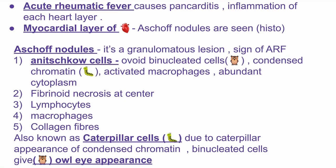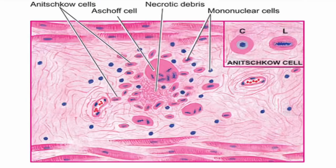Coming to the contents of Aschoff nodules, we find Anitschkow cells, fibrinoid necrosis at the center, lymphocytes, macrophages, and collagen fibers are also found.